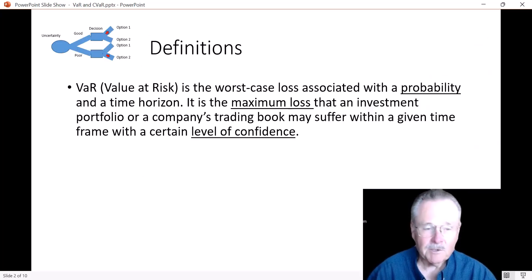Let's talk about definitions first. VaR, value at risk, is the worst case loss associated with a probability and a time horizon. It is the maximum loss that an investment portfolio or a company may suffer within a given time frame with a certain level of confidence.